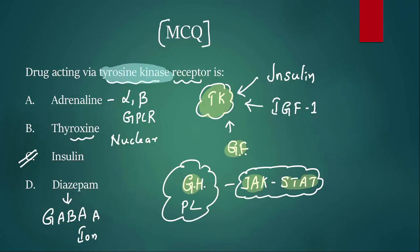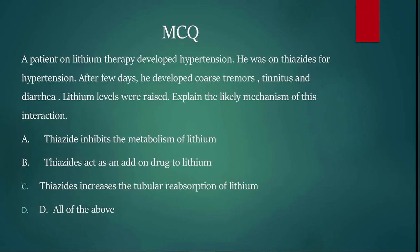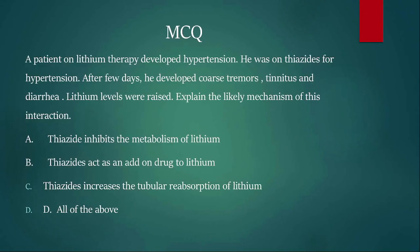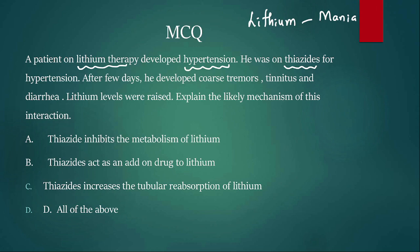Coming back to MCQ 1: tyrosine kinase receptor activation is done by insulin, IGF-1, and growth factors — so the answer is insulin. Moving to MCQ 2: a patient on lithium therapy developed hypertension and was put on thiazides. Lithium is mainly used to manage mania and bipolar disorder.